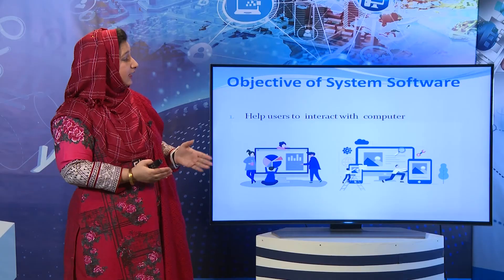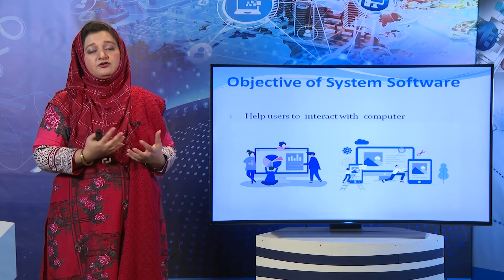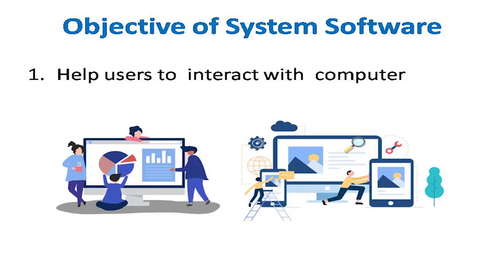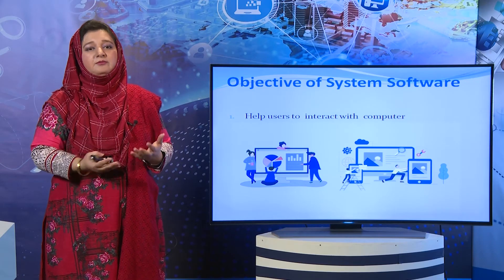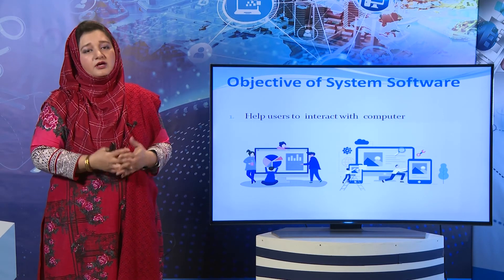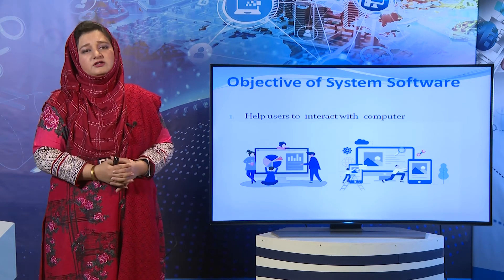System software کا سب سے پہلا objective یہ ہے کہ it helps the user to interact with the computer. آپ کا جتنا بھی interaction computer کے ساتھ ہوتا ہے وہ سب software کے ذریعے ہوتا ہے. جب آپ computer boot up کرتے ہیں تو ایک window open ہوتی ہے جس میں password enter کرتے ہیں، پھر main menu میں enter ہو جاتے ہیں. وہاں سے آپ word file بنا سکتے ہیں، game کھیل سکتے ہیں، internet پر browsing کر سکتے ہیں — یہ سب کام اس software کے ساتھ کر رہے ہوتے ہیں۔